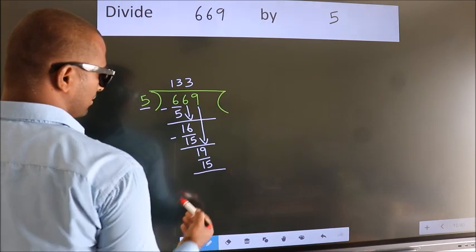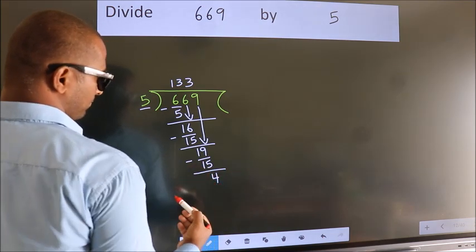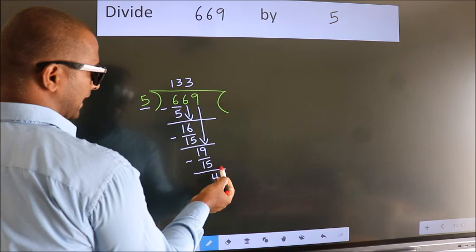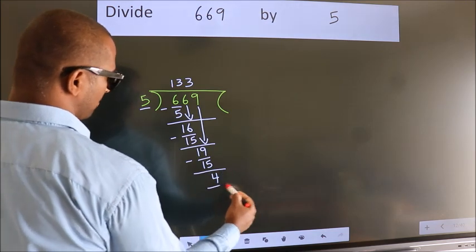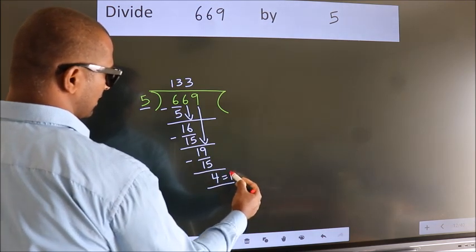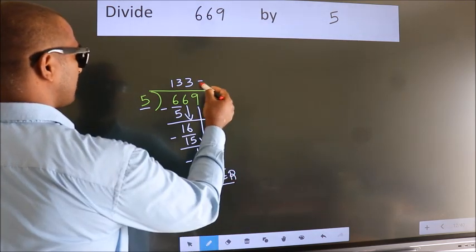Now we subtract. We get 4. No more numbers to bring it down. So we stop here. This is our remainder. This is our quotient.